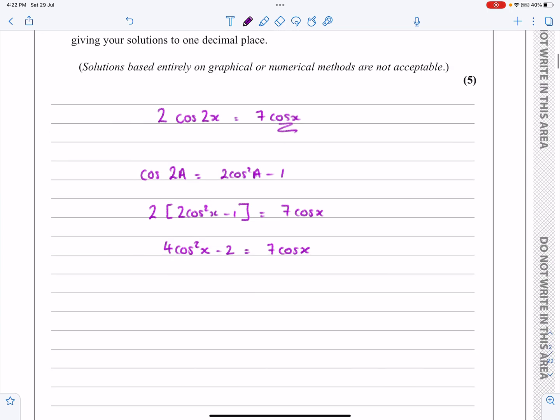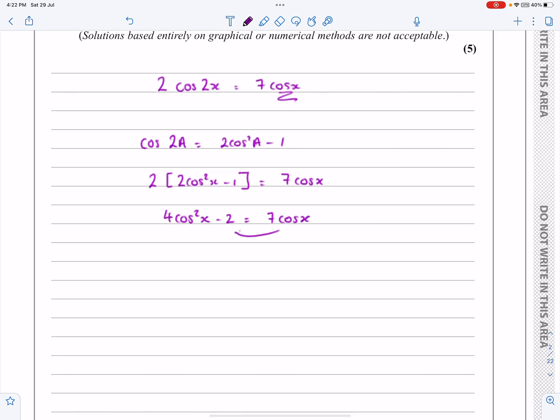And right at the very start, I knew that we were going to get to this stage with the next step. Take the 7x over to the other side, so that we end up with 4 cos squared x minus 7 cos x minus 2 equals 0. And this is absolutely perfect now. I can solve this as a quadratic equation.